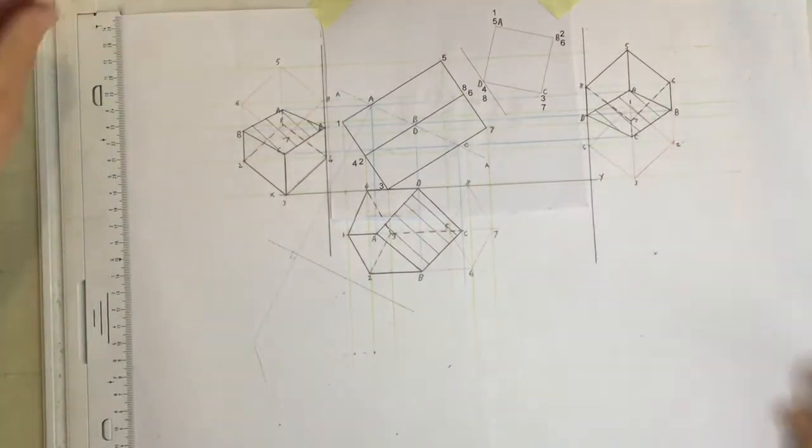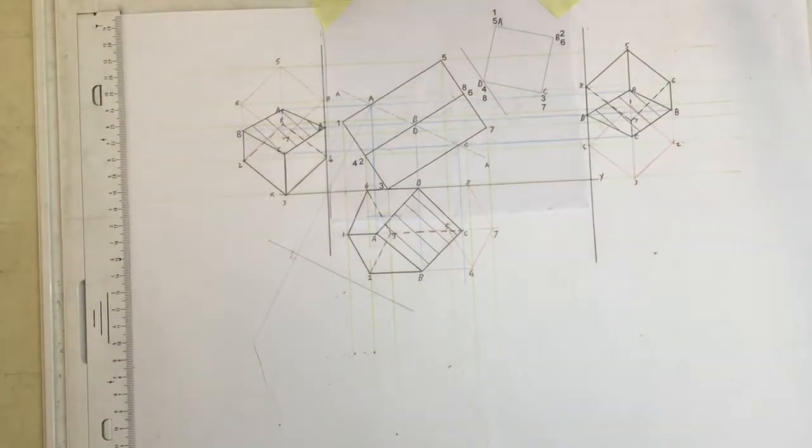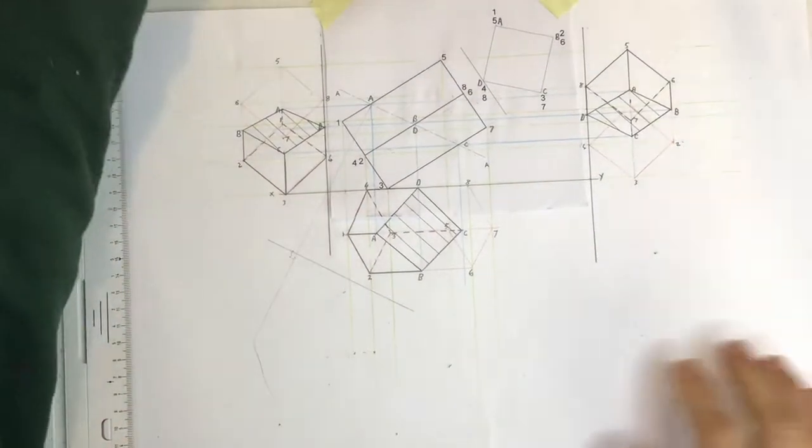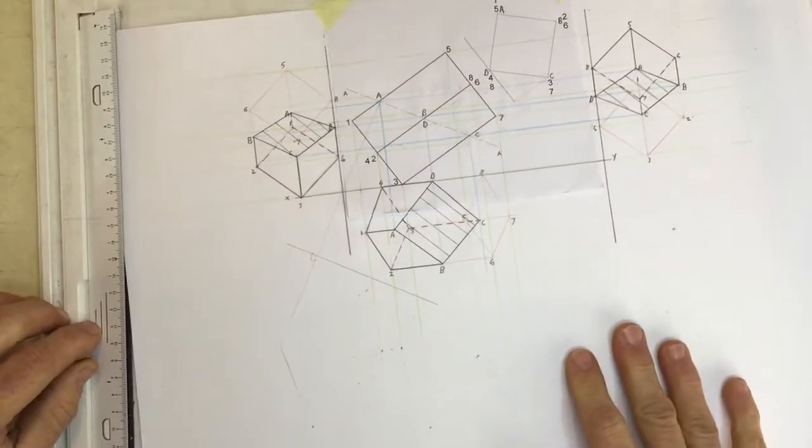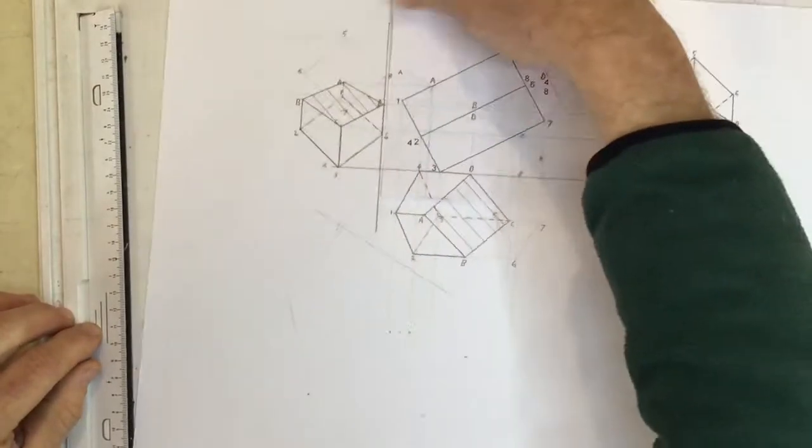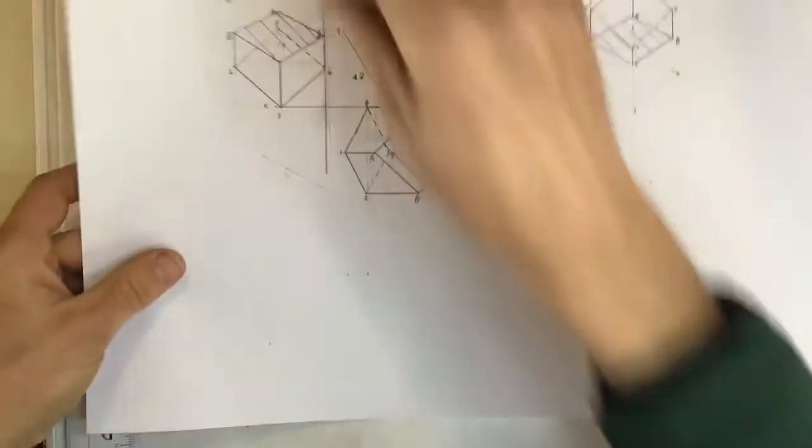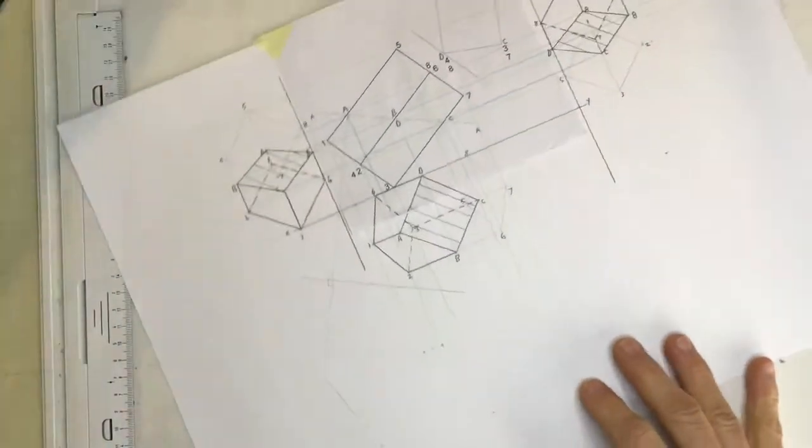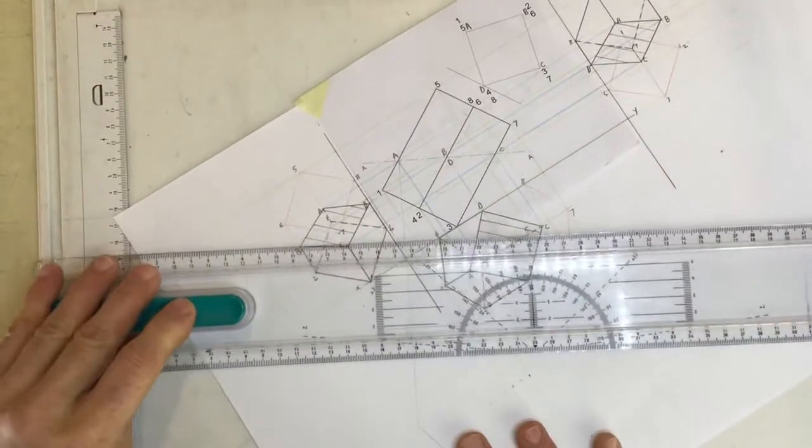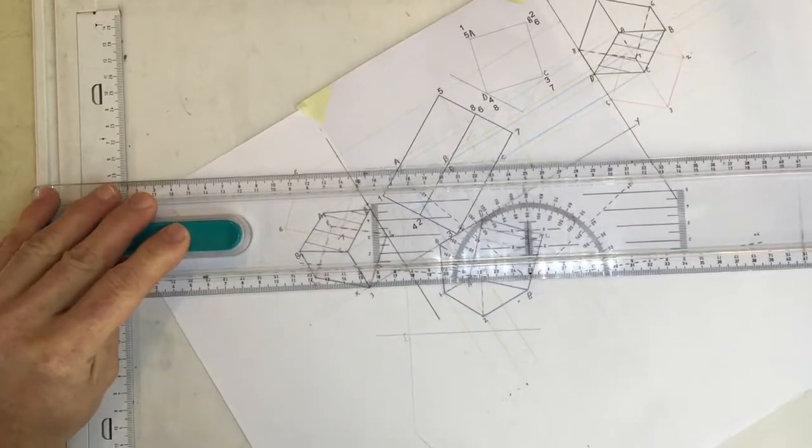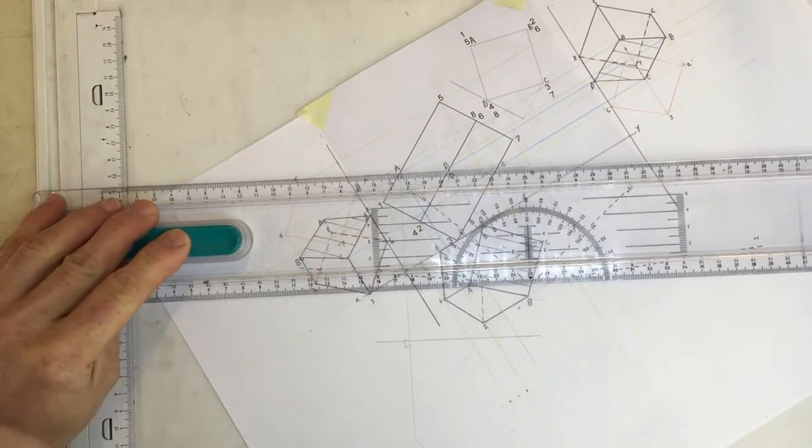So my suggestion to you is get yourself some wonderful stuff called masking tape. You can remove your drawing at this stage, just remove that drawing from your board. Take your t-square, line your t-square up with the cutting plane over here.